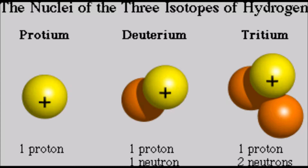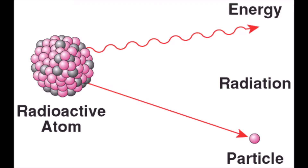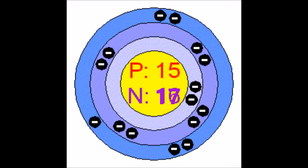An isotope is two or more forms of the same element containing equal number of protons but different number of neutrons in their nuclei. A radioactive isotope, or radioisotope, is the isotope of a chemical element having an unstable nucleus that decays, emitting alpha, beta, or gamma rays until it stabilizes.